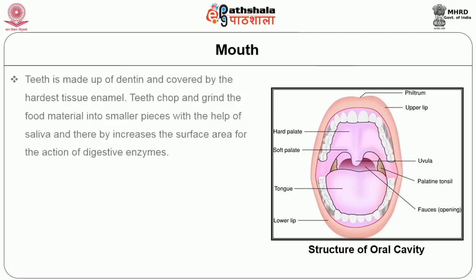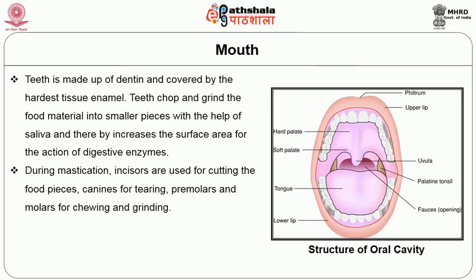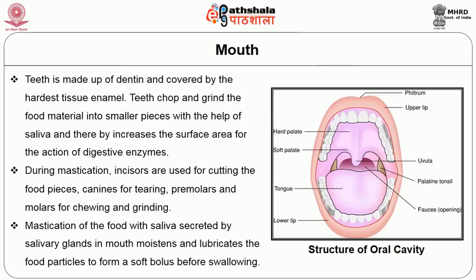The tongue also helps to produce speech by altering the airflow through the mouth to produce sounds of different consonants. Teeth are made up of dentine and covered by the hardest tissue, enamel. Teeth chop and grind food material into smaller pieces with the help of saliva, increasing the surface area for the action of digestive enzymes. During mastication, incisors are used for cutting food pieces, canines for tearing, and premolars and molars for chewing and grinding. Mastication of food with saliva moistens and lubricates the food particles to form a soft bolus before swallowing.